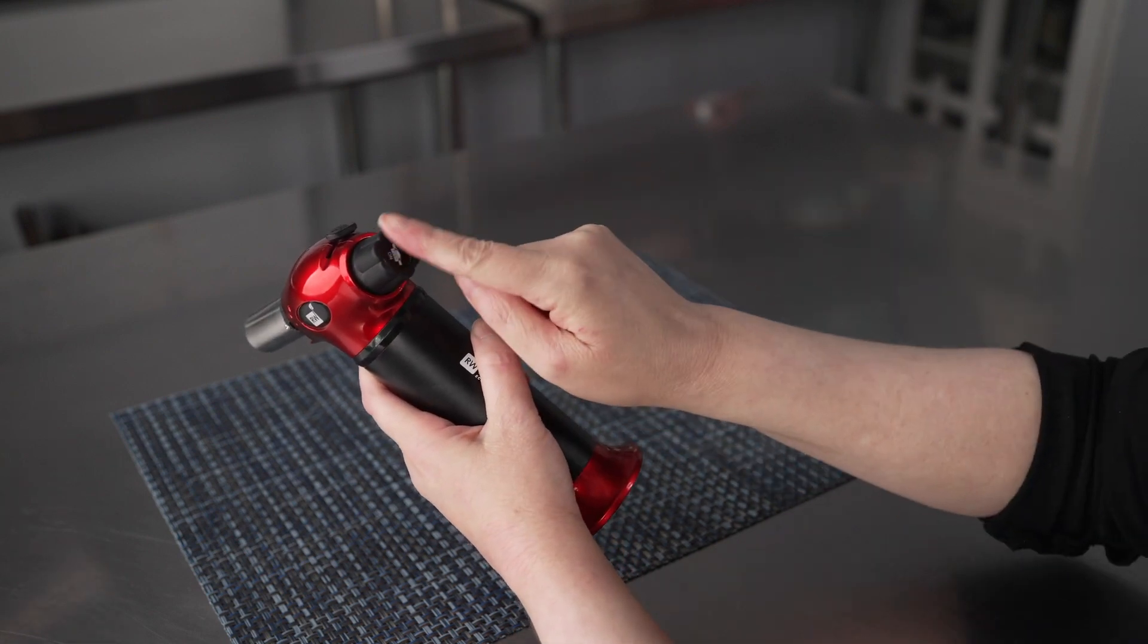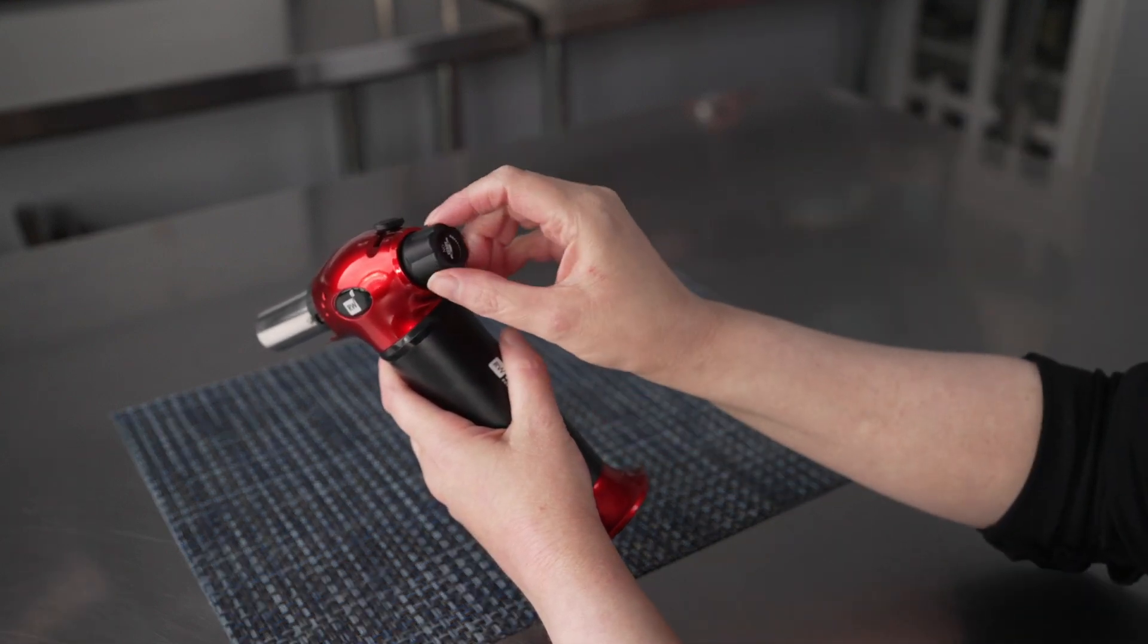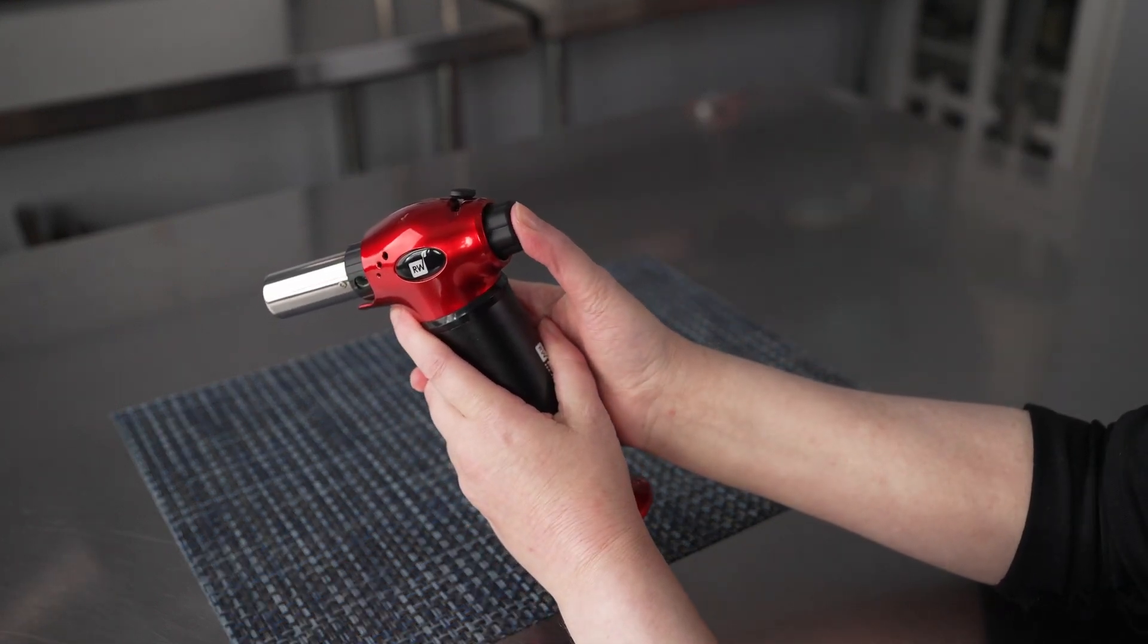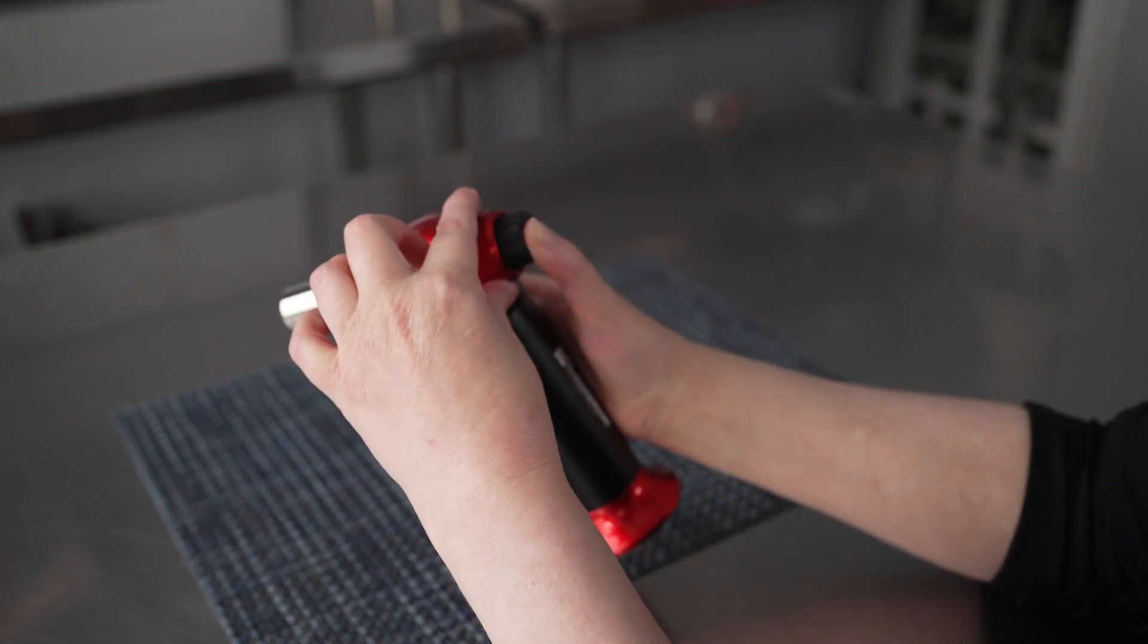So when you get started, you want to take that little regulator knob on the back, turn it counterclockwise until it stops. That will allow you then to push the button and get ignition, and then you can lock in place.